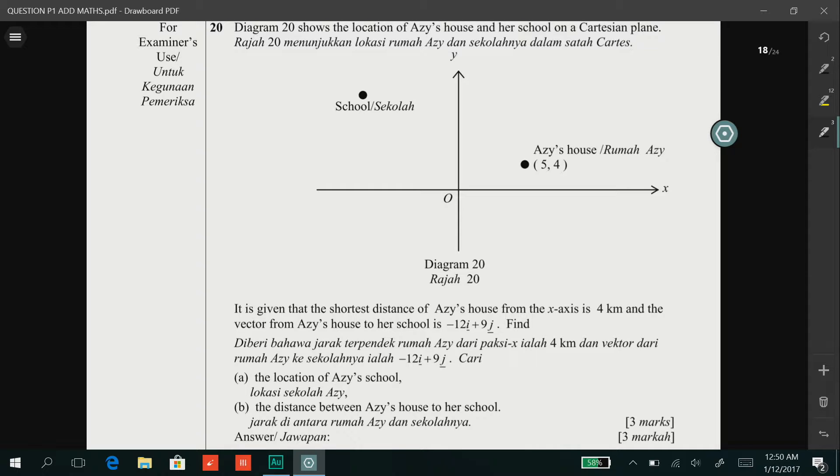It is given that the shortest distance of Aziz's house from the x-axis is 4 km and the vector from Aziz's house to her school is -12i + 9j.